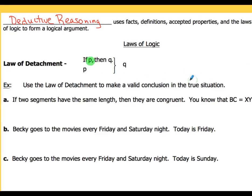P is going to be at the beginning — that's going to be your hypothesis — and Q is going to be at the end as your conclusion. For the second statement that you get, you'll be given information about P. If that's the order things are presented in, then you can make the conclusion that Q is going to be true. Let's take a look at three examples to see what that looks like.